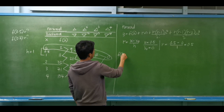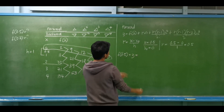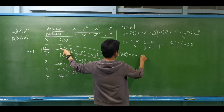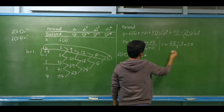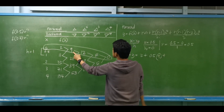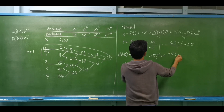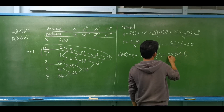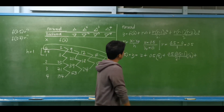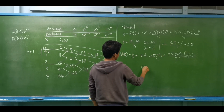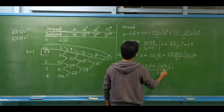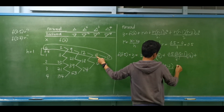Now let us determine f(0.5). f(x) equals f(x₀) which is 2, plus r·Δ = 0.5 times 9, plus r(r−1)/2! times Δ² = [0.5 × (0.5−1)/2] × 12, plus r(r−1)(r−2)/3! times Δ³ = [0.5 × (0.5−1) × (0.5−2) / 6] × 6.